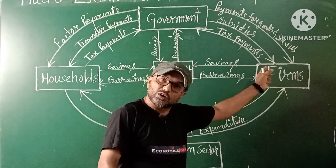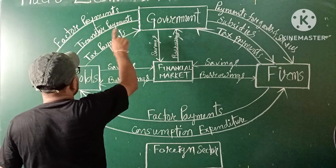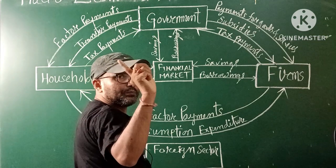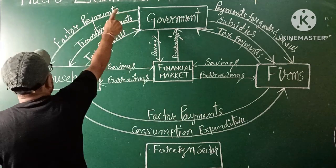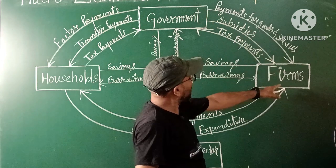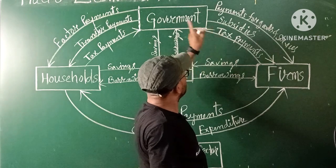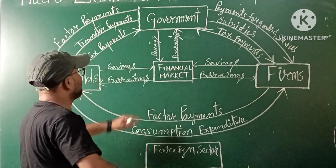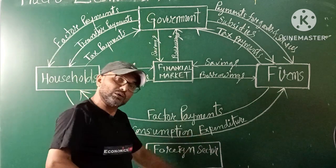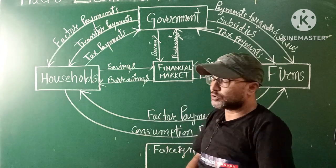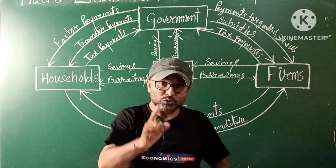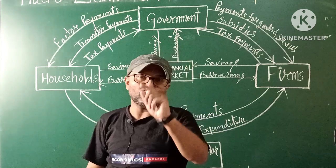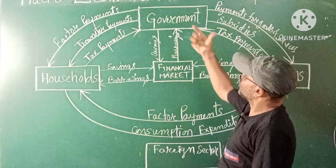In the three-sector circular flow, we have household, firms, and government — with money flow, factor payments, goods and services payments, subsidies, and tax payments. Savings go to the financial market, and borrowing comes from the financial market. Today our important topic is the four-sector circular flow, which adds the external sector — also called the foreign sector or rest of the world.